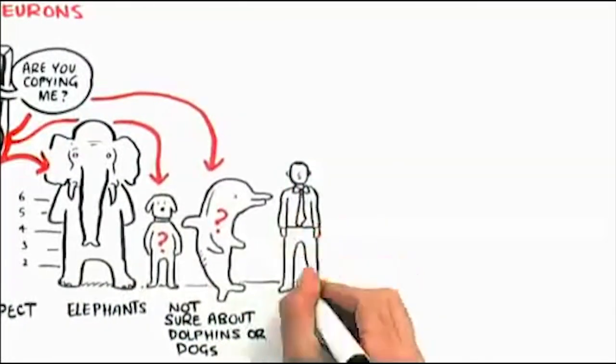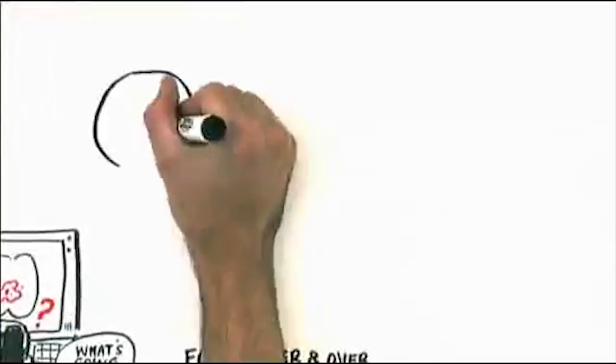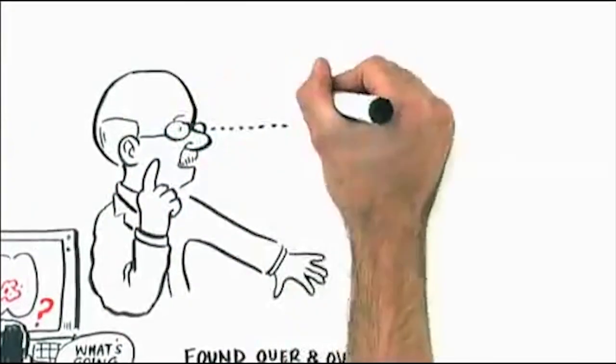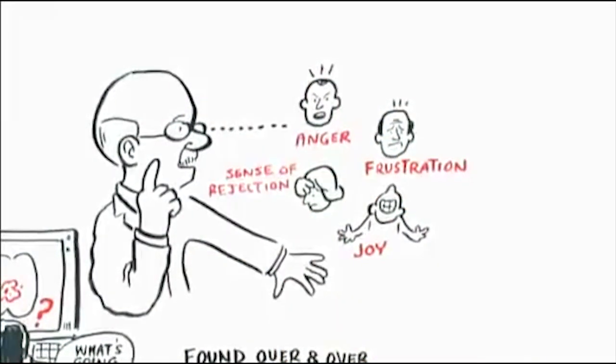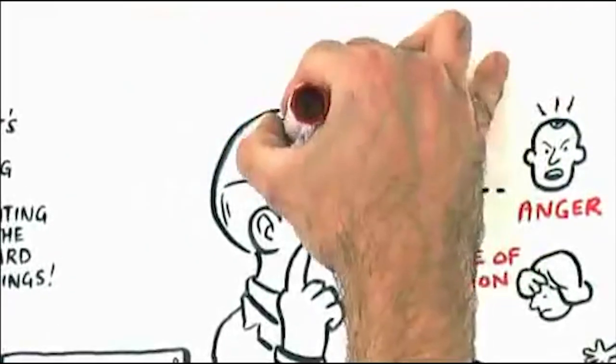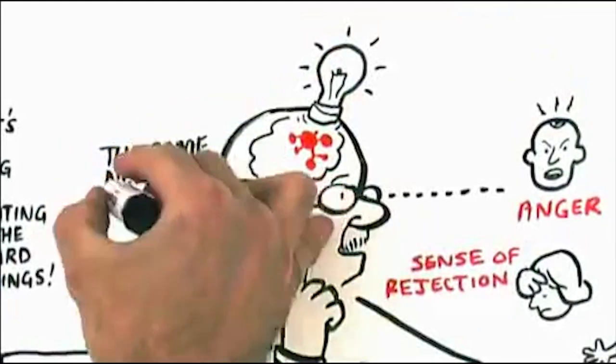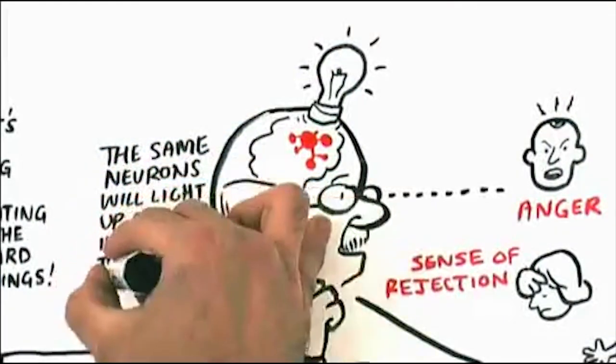But all humans are soft-wired with mirror neurons so that if I'm observing you, your anger, your frustration, your sense of rejection, your joy, whatever it is, and I can feel what you're doing, the same neurons will light up in me as if I'm having that experience myself.